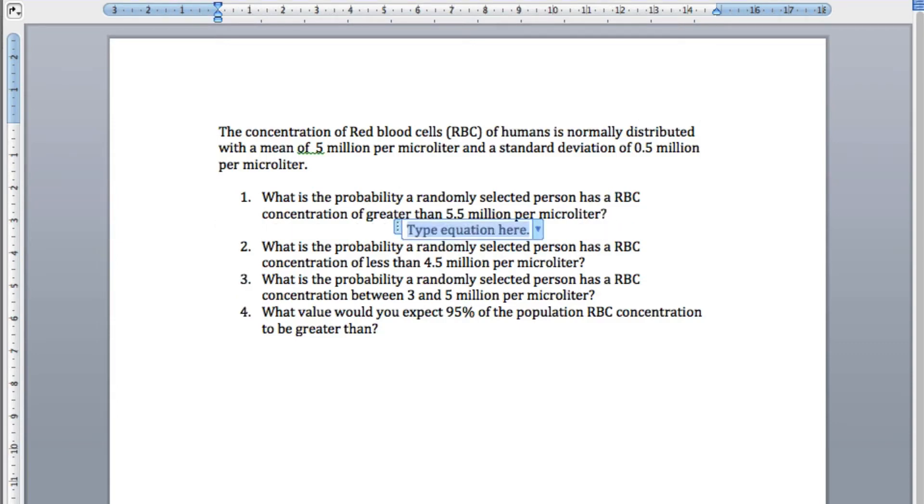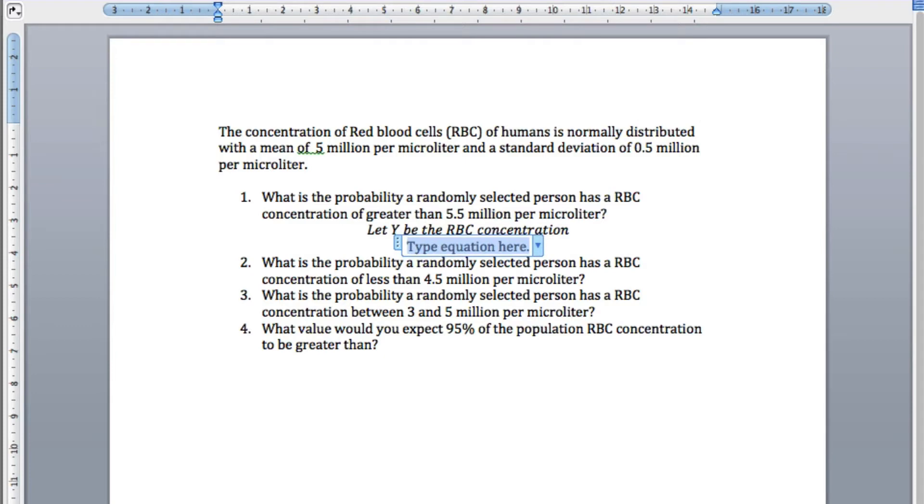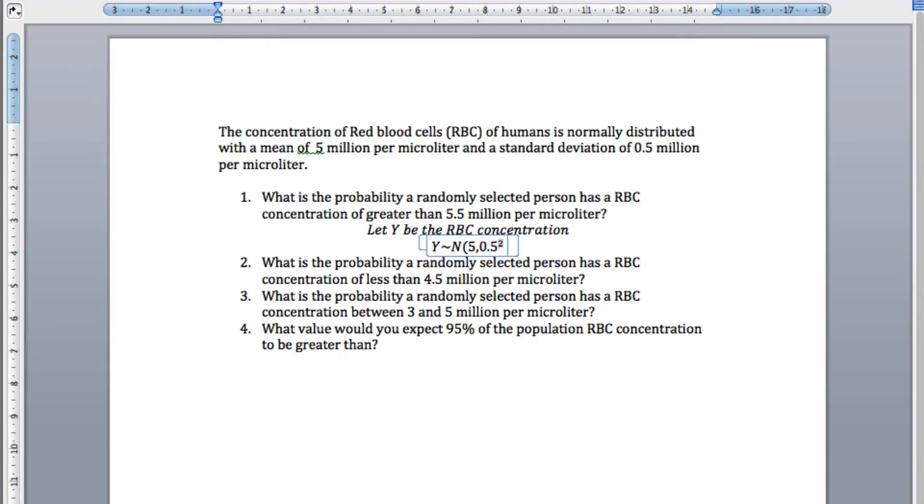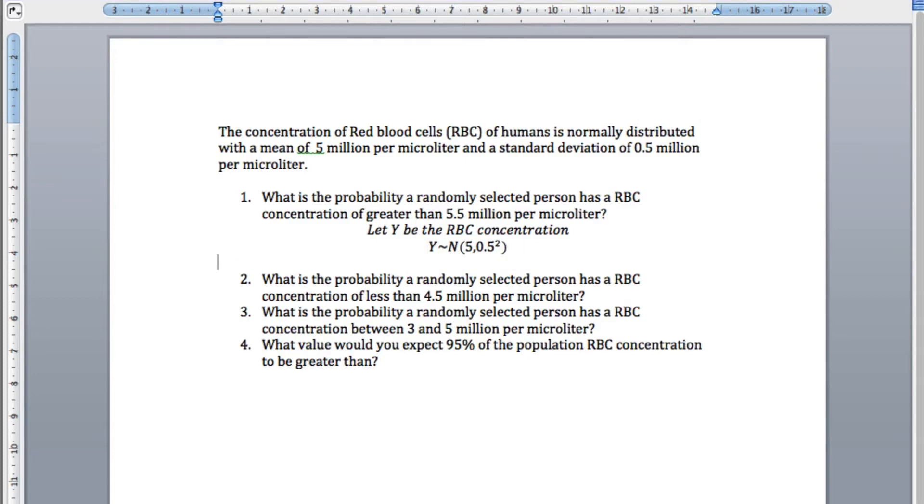Let's start by defining a random variable. Let Y be the RBC concentration. The first thing we know is that Y is normally distributed with a mean of 5 and a standard deviation of 0.5, so we've got a variance of 0.5 squared. What do we want to know? We want the probability that Y is greater than 5.5.